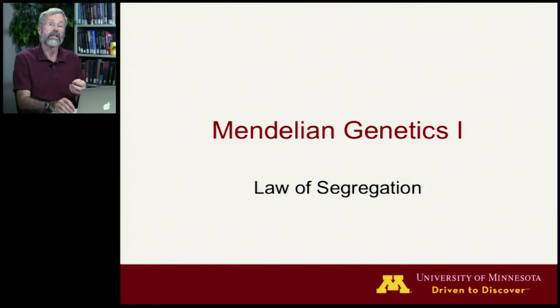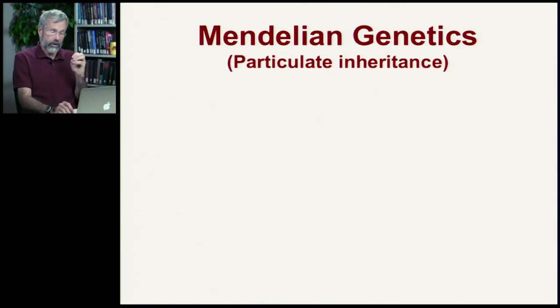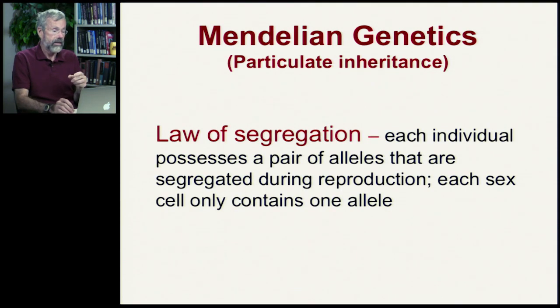Mendel's experiments led to two essential insights about the pattern of inheritance. The first is called the law of segregation. We now know from Mendel that inheritance is particulate, that you get an intact gene that gets passed on from one generation to the next. He formulated the idea of the law of segregation, which says that each individual possesses a pair of alleles that are segregated during reproduction, and each sex cell only contains one allele.